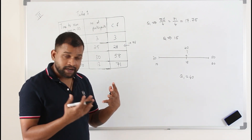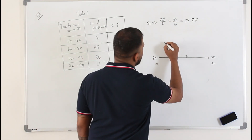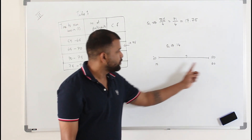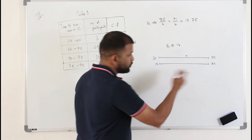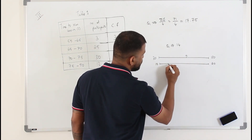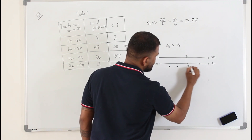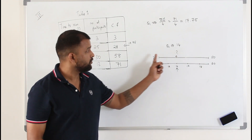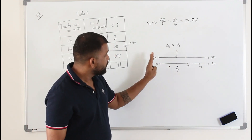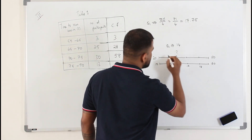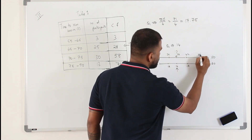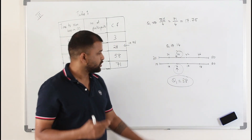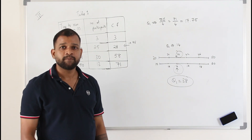If you still don't get it, here's another example. Say Σf/4 gives you 14, and 14 lies between cumulative frequencies 10 and 20. If you divide 10 to 20 into 5 equal intervals: 12, 14, 16, 18, 20 — then 14 is at the first step. Now divide the class interval 30 to 50 into 5 equal intervals: 34, 38, 42, 46, 50. The value corresponding to 14 is 38 — that is your lower quartile. This is the linear interpolation method.